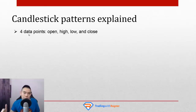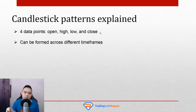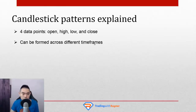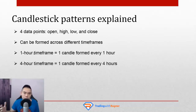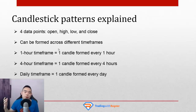A candlestick has four data points: the opening price, the highest price point of the candle, the lowest price point, and the closing price. Candlestick patterns can be utilized across different timeframes — daily, four hour, hourly, or weekly. On the one-hour timeframe, one candle forms every one hour. On the four-hour timeframe, one candle forms every four hours. On the daily timeframe, one candle forms every single day. Now, how do you read candlestick patterns?